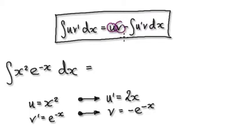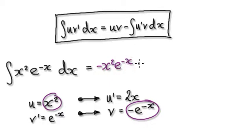So now it's just about following this procedure here. So it would be u times v. So that would be u times v, which would give you minus x squared, e to the minus x. And then you've got your take away, and then the integral of u prime times v.